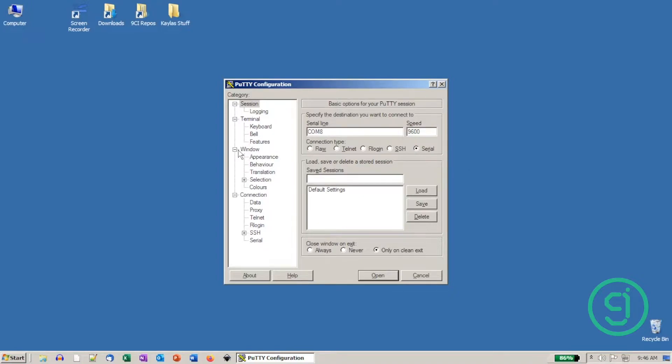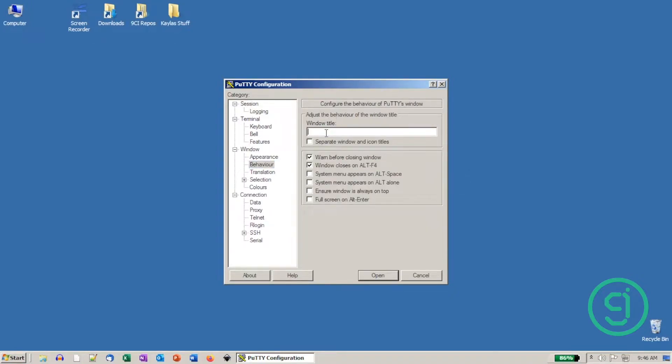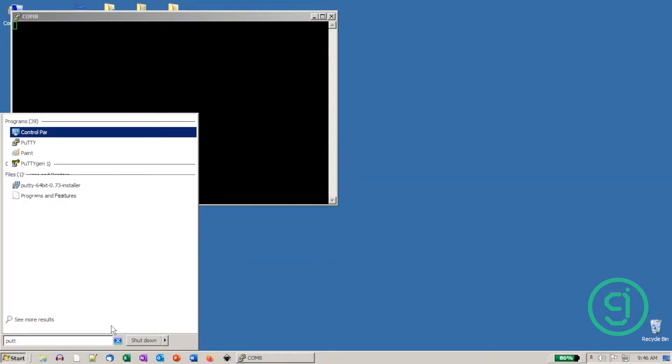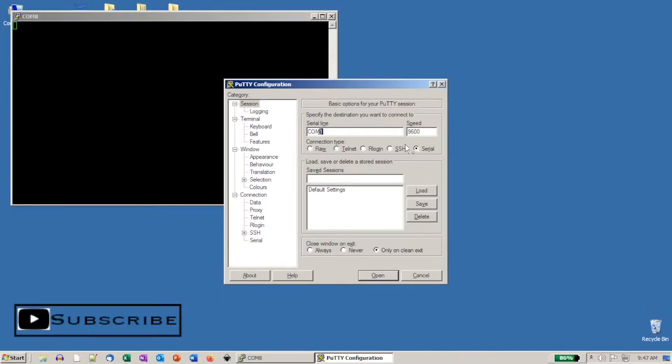And then in the window tab, under behavior, name the window title. We used comm 8 for one of ours. Click open. Then repeat for the second window on either the same or your secondary device. Again, this is going to be comm 9 for us.